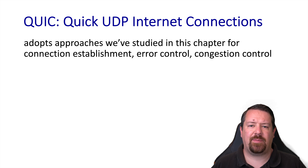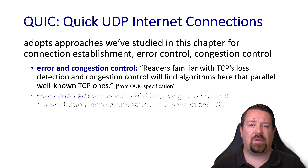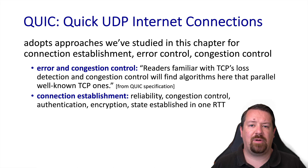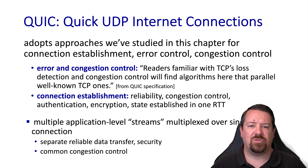QUIC also uses some of the same approaches we've already seen for handling error control and congestion control. But one of the primary motivations for making this move is to expedite connection setup. All the state that QUIC needs for reliability, congestion control, authentication, and encryption are established in a single round trip time. It also multiplexes multiple application streams over a single connection.